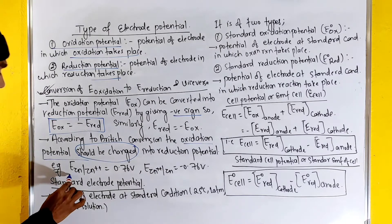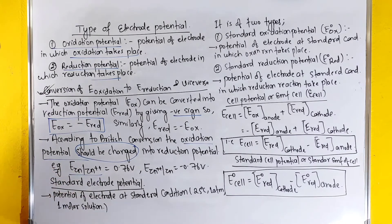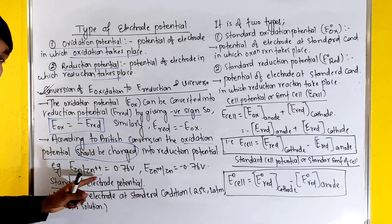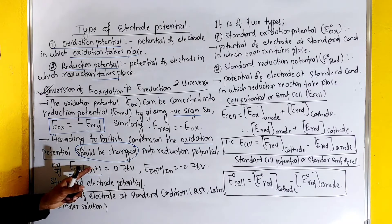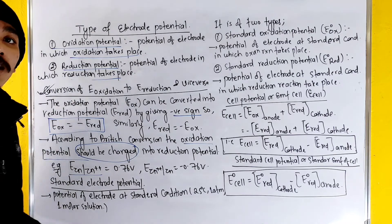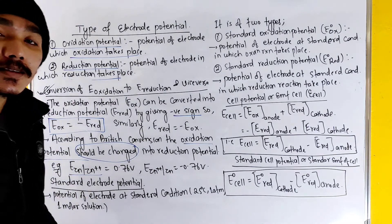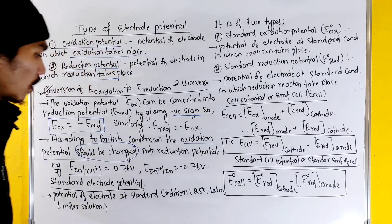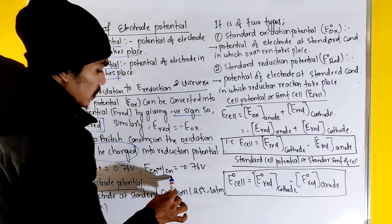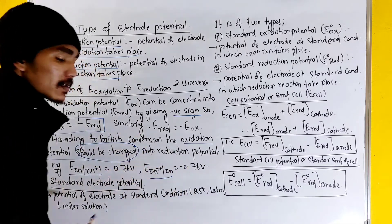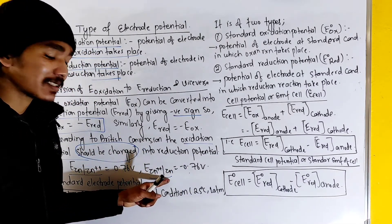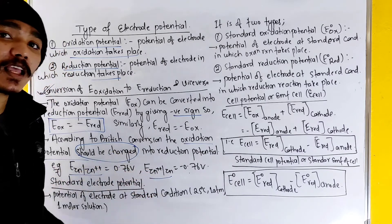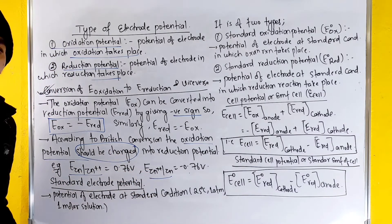For example, we have zinc. This is E(Zn²⁺/Zn). That means positive charge increases, which we call oxidation. What we call Zn²⁺/Zn — what do we call reduction potential?